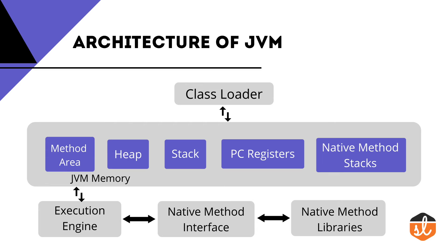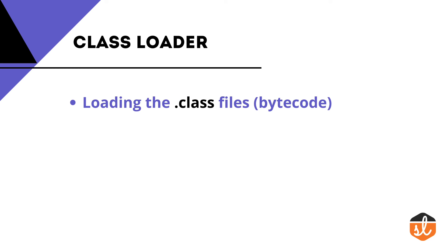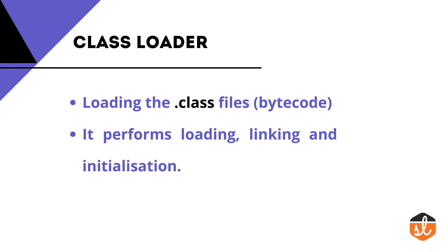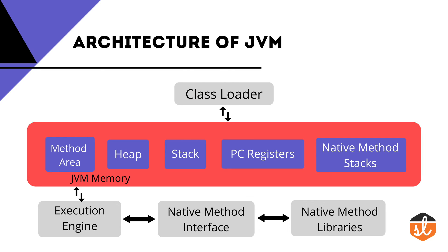Now let's discuss the architecture of JVM and its internal functioning. JVM has different components, each with specific tasks. The first component is the Class Loader. It is basically used for loading .class files and performs three major functions: loading, linking, and initialization.